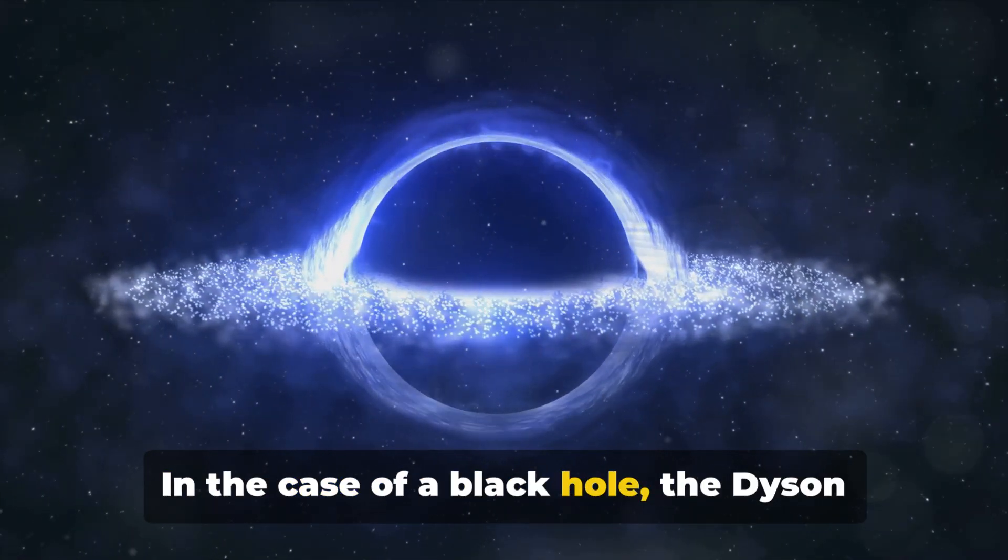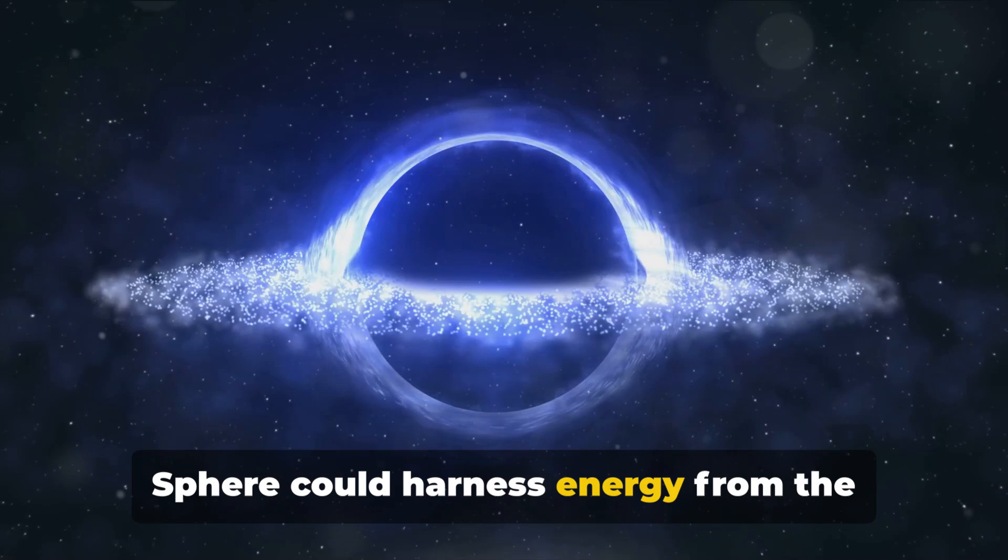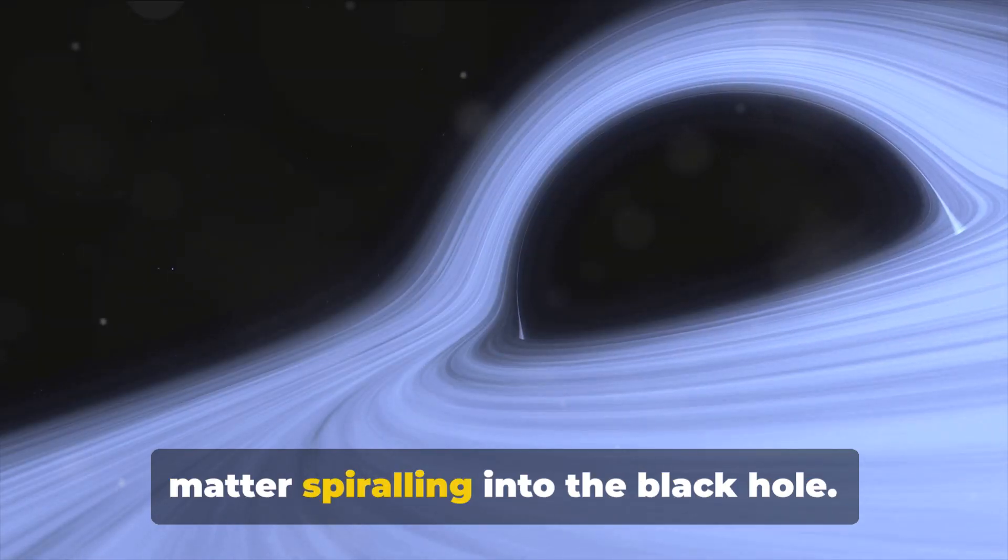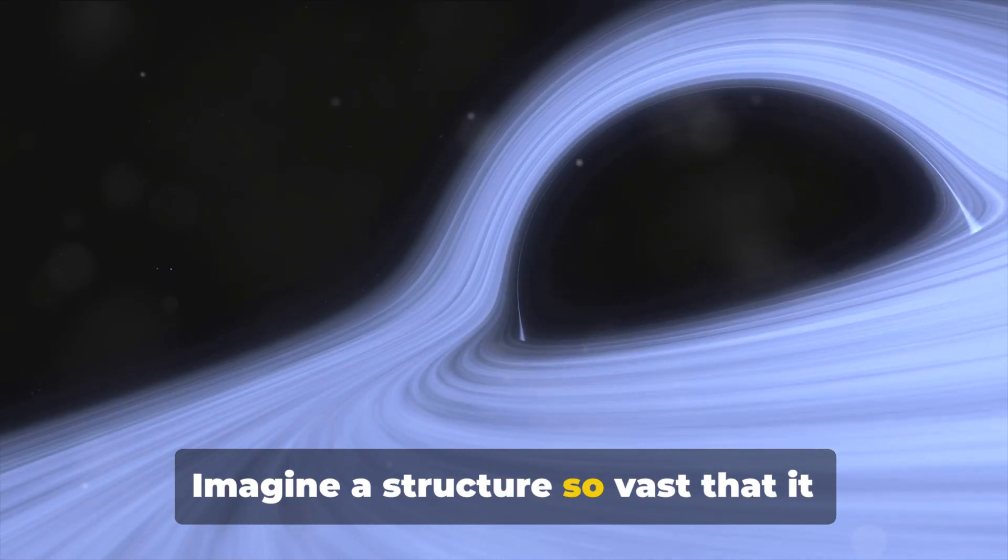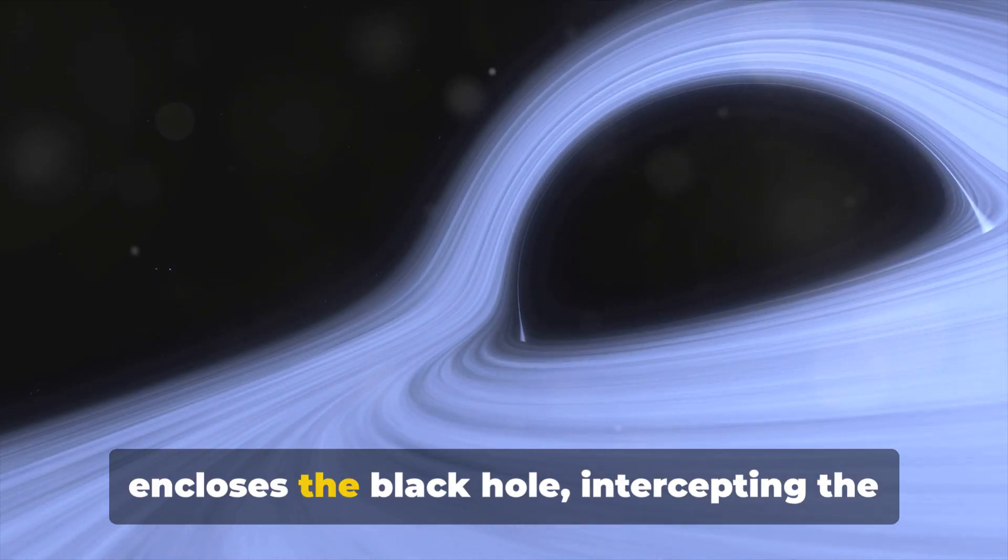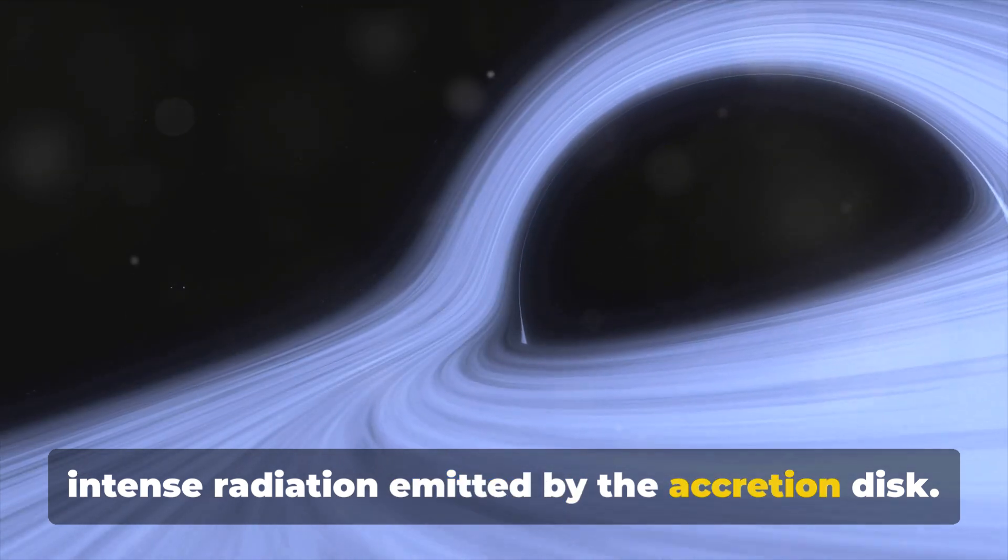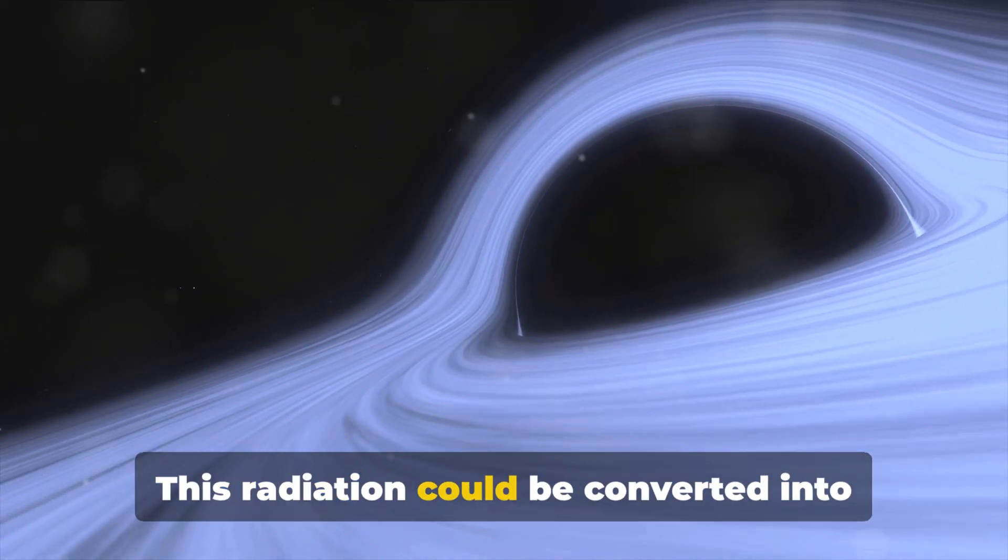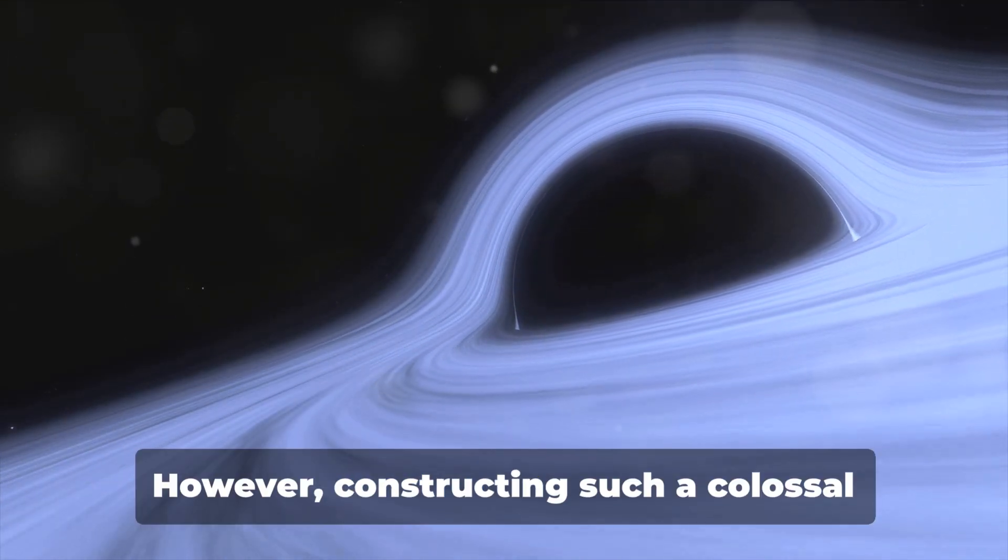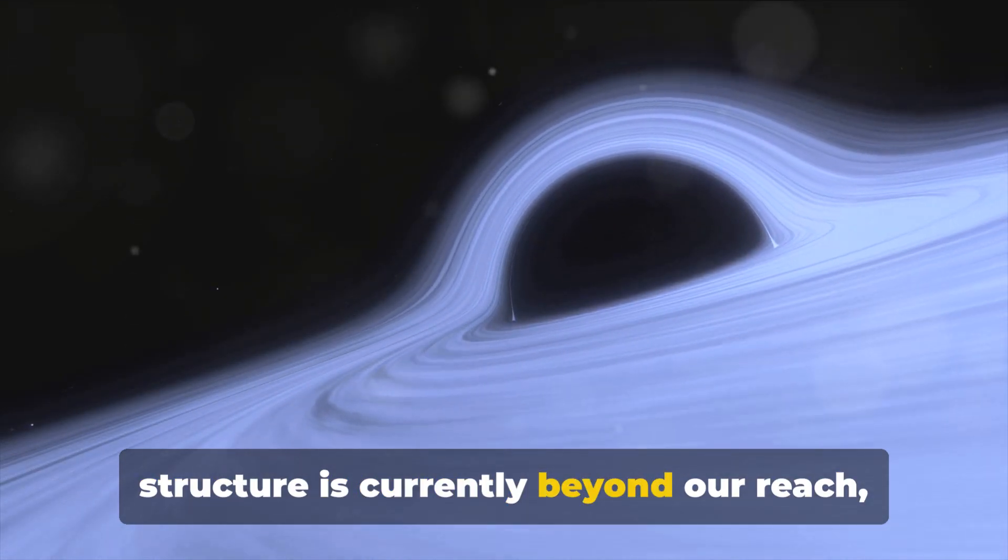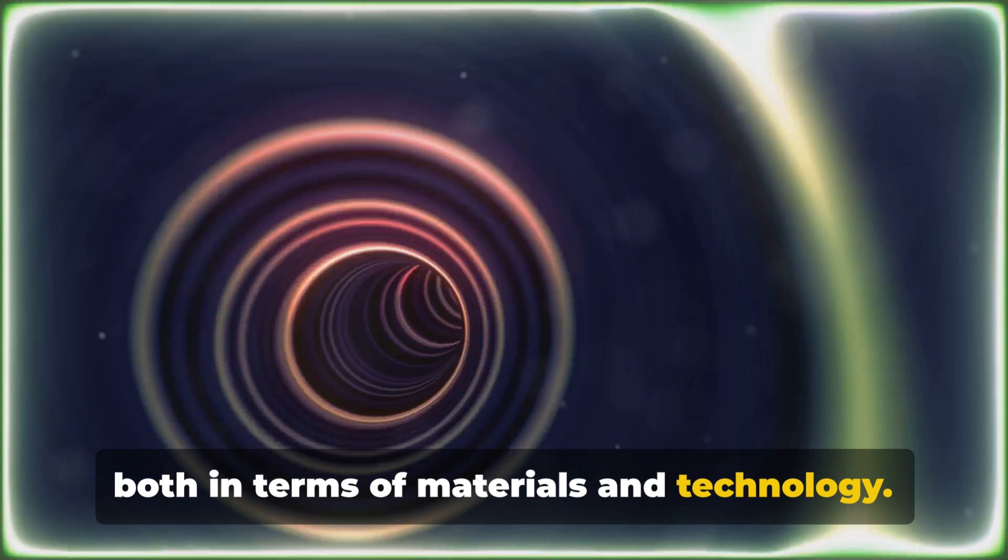In the case of a black hole, the Dyson Sphere could harness energy from the accretion disk, the swirling mass of matter spiraling into the black hole. Imagine a structure so vast that it encloses the black hole, intercepting the intense radiation emitted by the accretion disk. This radiation could be converted into usable energy. However, constructing such a colossal structure is currently beyond our reach, both in terms of materials and technology.